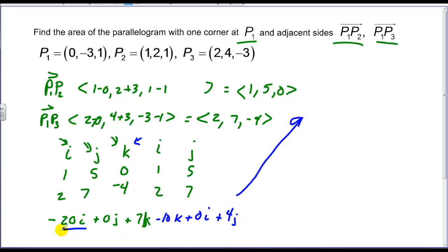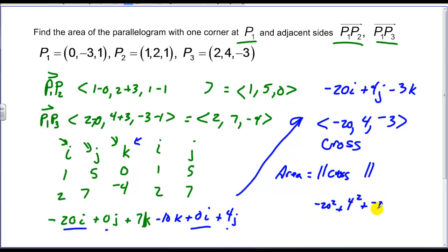Let's get our like terms. I's and i's. Negative 20, i. J and j. Gives us 4, j. And then our k term is a negative 3. So we have the vector negative 20, 4, and negative 3 as our cross product. But we want to find area. So we need to take the magnitude of the cross. So that's just negative 20 squared plus 4 squared plus negative 3 squared. And we're going to square root all that. And we end up getting approximately 20.54 square units.